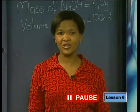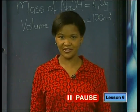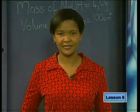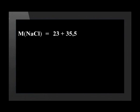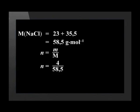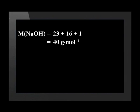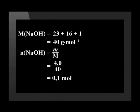To calculate the molar concentration of our two solutions, we start by calculating the number of moles present in each solute. First, we calculate the molar mass of sodium chloride, which is 58.5 grams per mole. Then we calculate the number of moles by dividing the mass by the molar mass, giving an answer of 0.068 moles. For sodium hydroxide, the molar mass is 40 grams per mole, and the number of moles present is 0.1 mole.